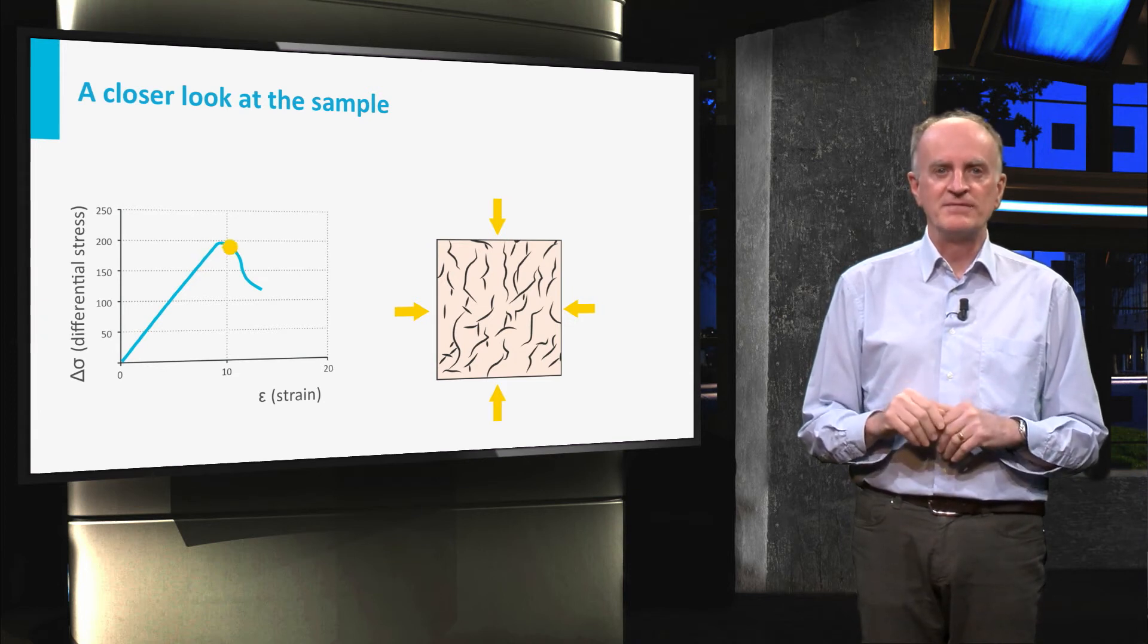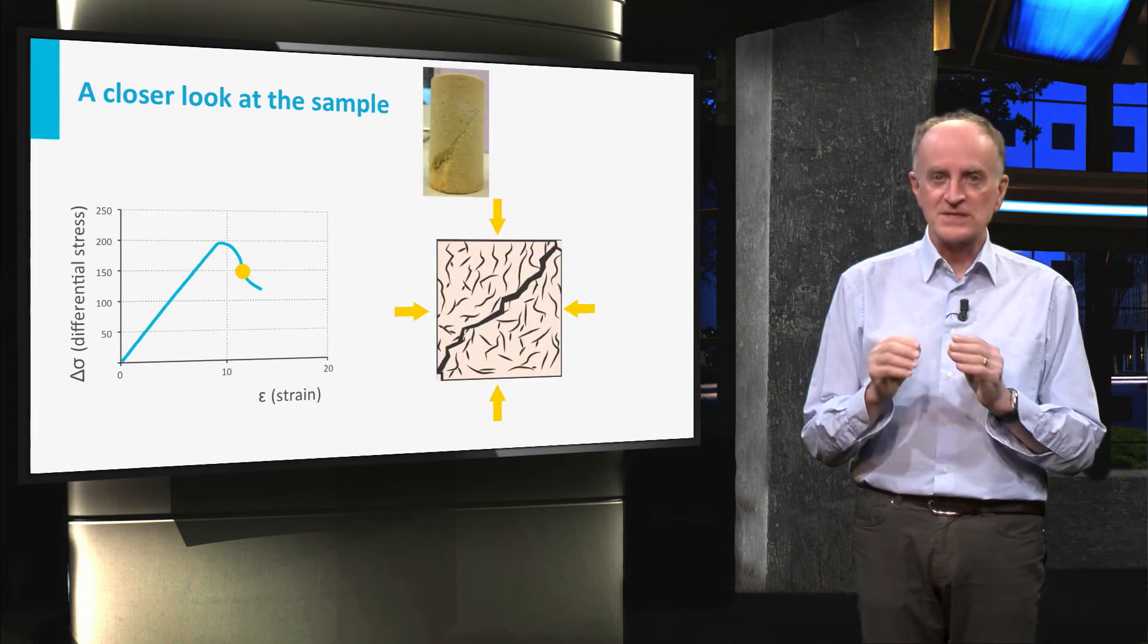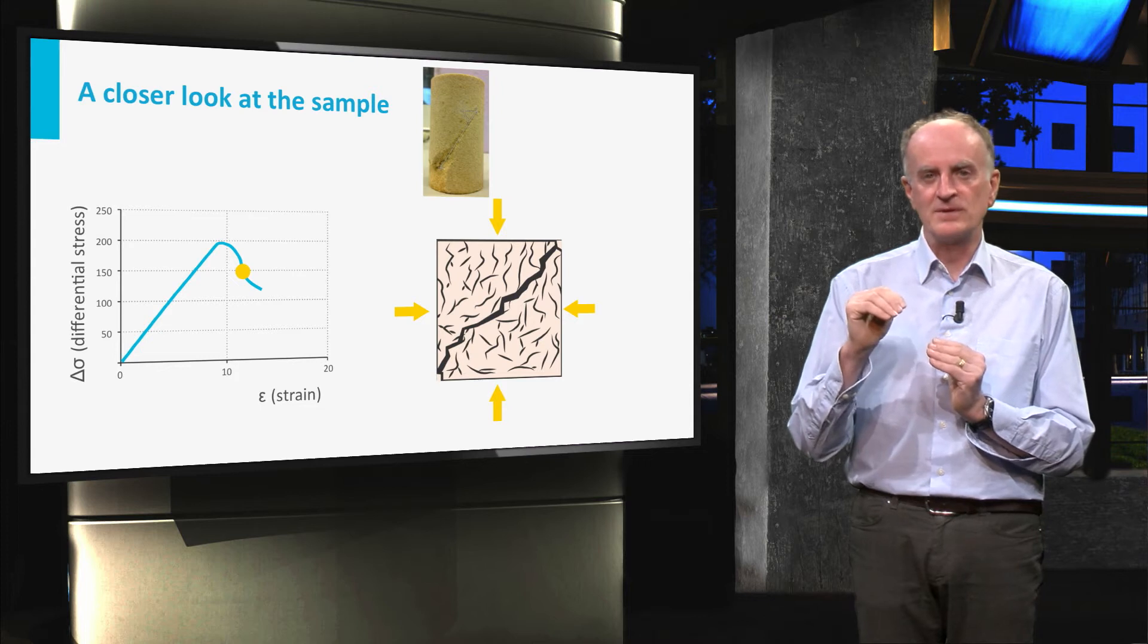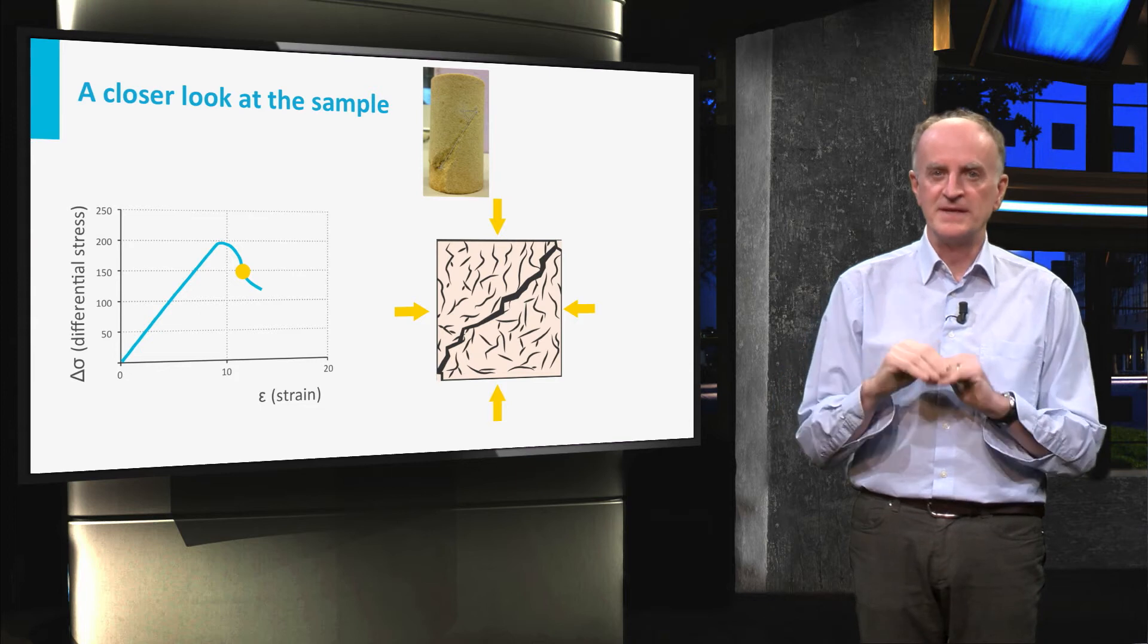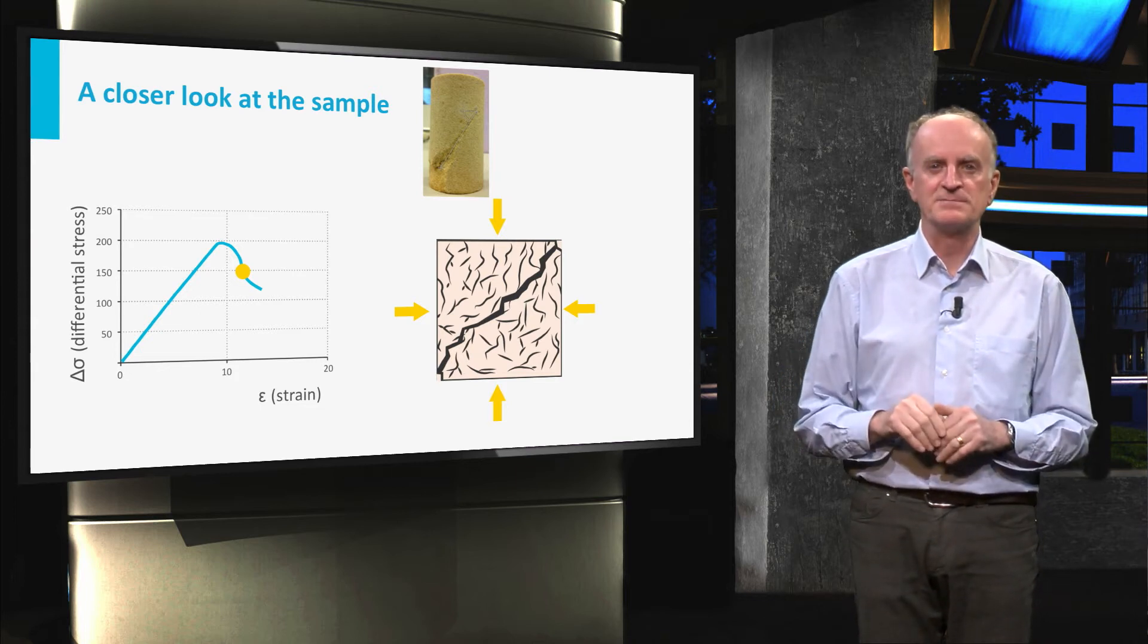Under low and intermediate confining pressures, fractures concentrate in a specific part of the sample, eventually leading to the development of a through-going fault. This marks the end of the experiment.